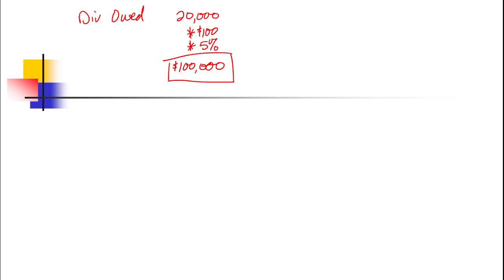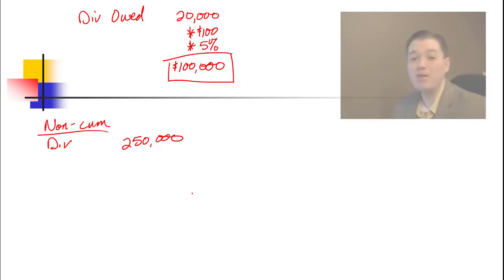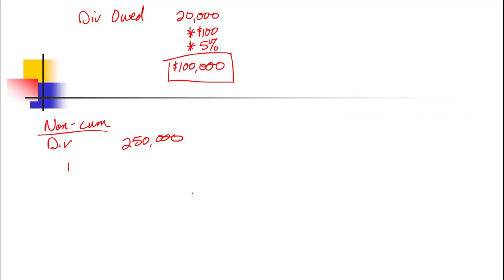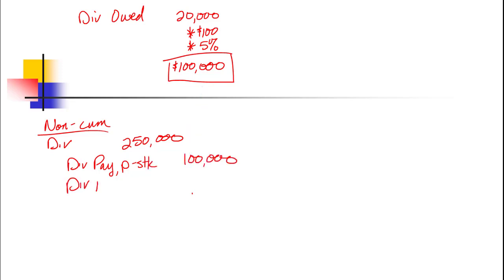Starting with non-cumulative: we're declaring a $250,000 dividend. Because it's non-cumulative, the fact that we're two years in arrears doesn't matter — we only owe them the current year's dividend. So we record a dividend payable to preferred stock for $100,000, and the remaining $150,000 goes to the common stockholders.